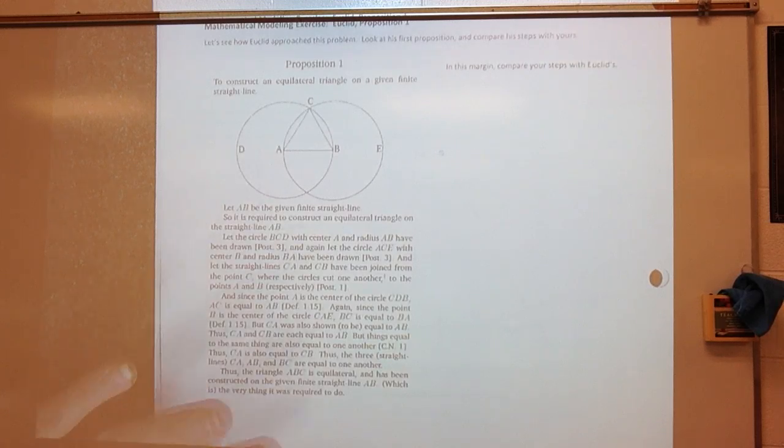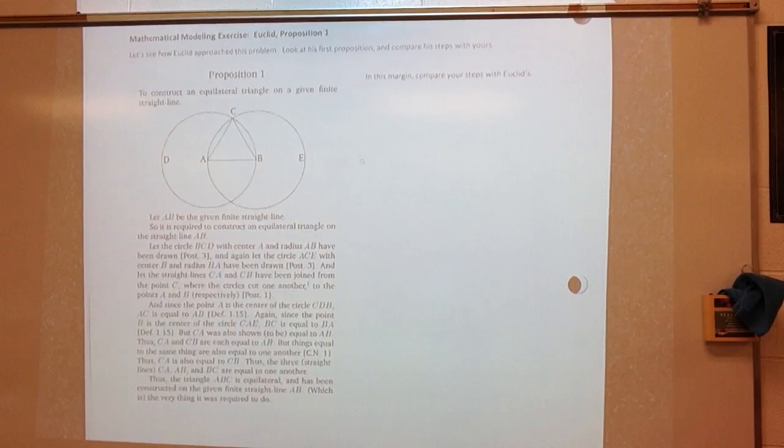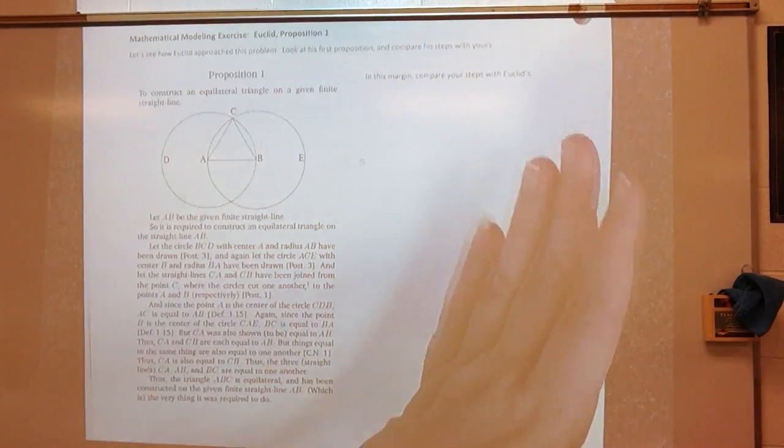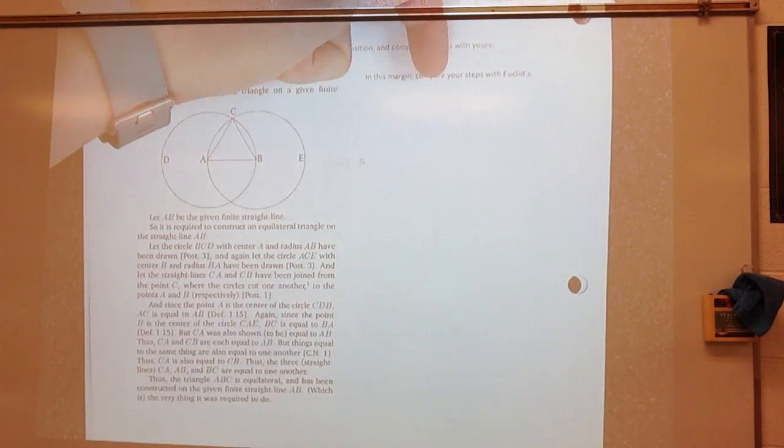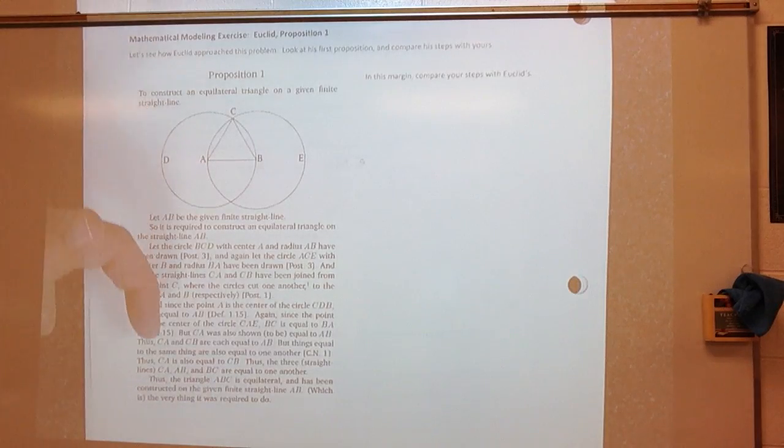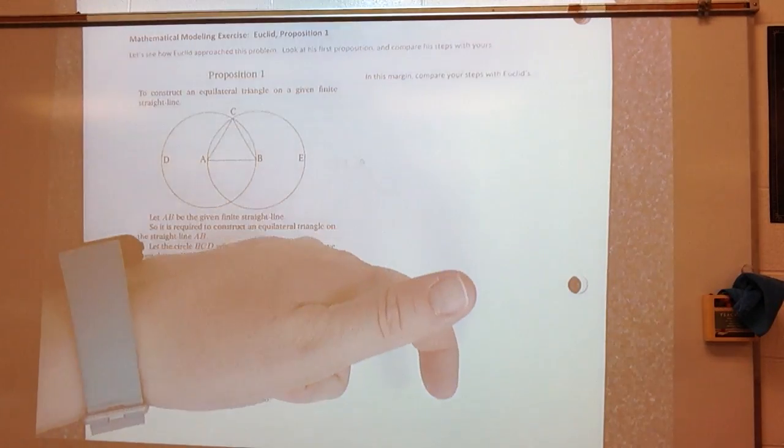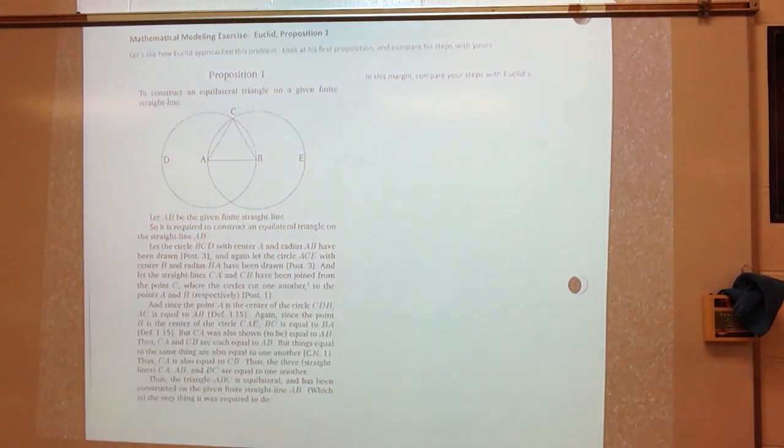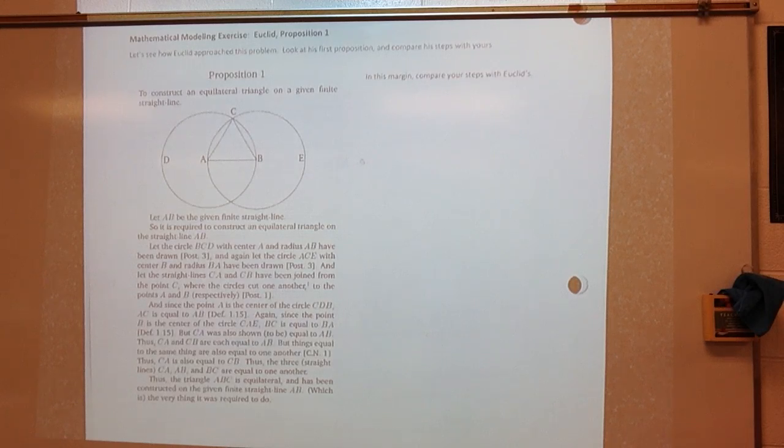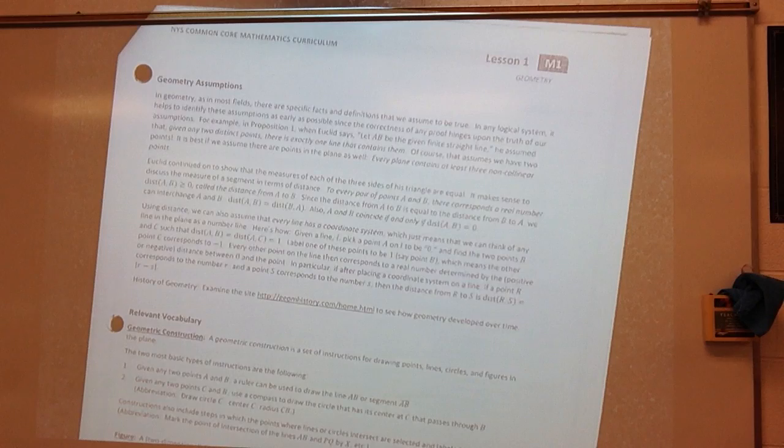Now, for your homework tonight, you're going to have a question, which is why we're not going to finish this part right here. But what you need to do is you need to compare your steps with Euclid's. All right? So, you need to go back through here and kind of write down the steps that you took in creating that triangle. Because part of your homework tomorrow will be creating, step by step, how to do an equilateral triangle.